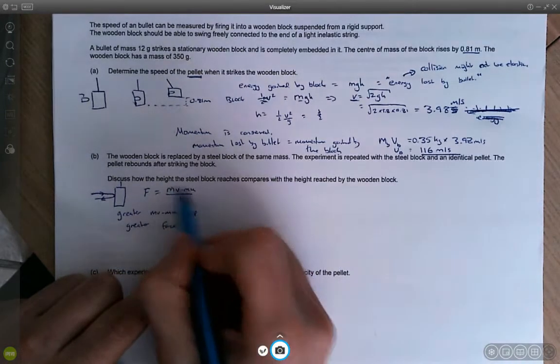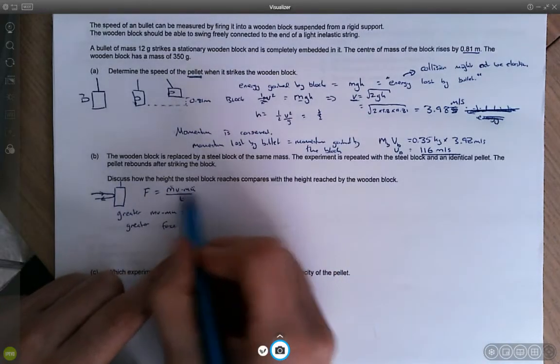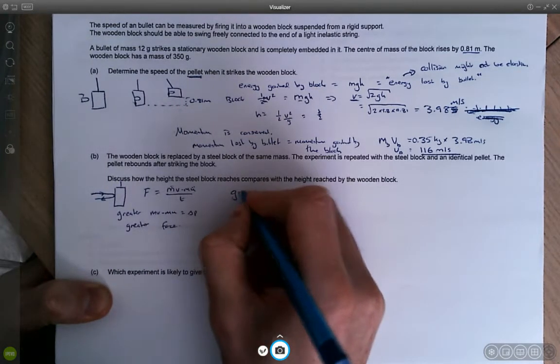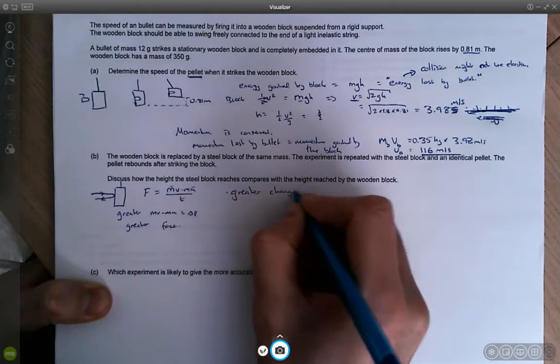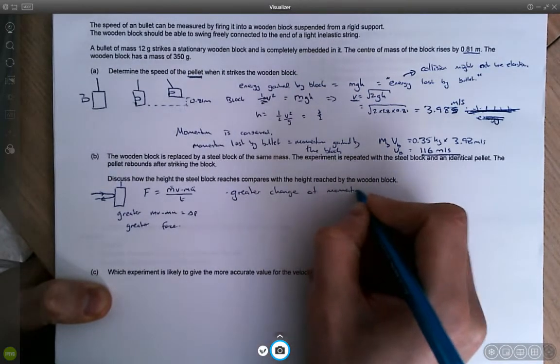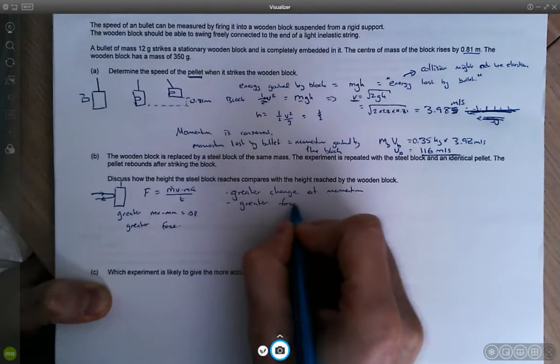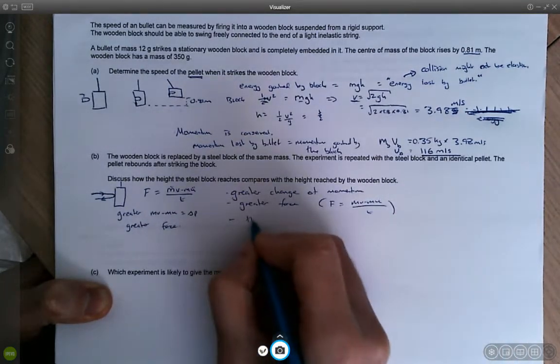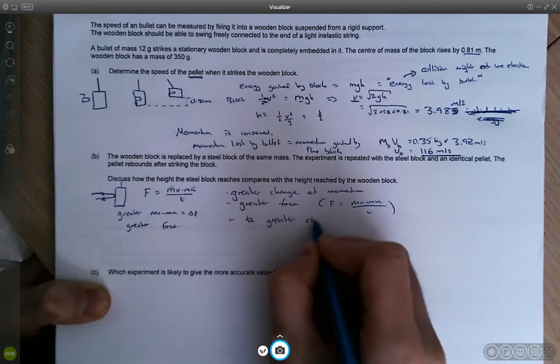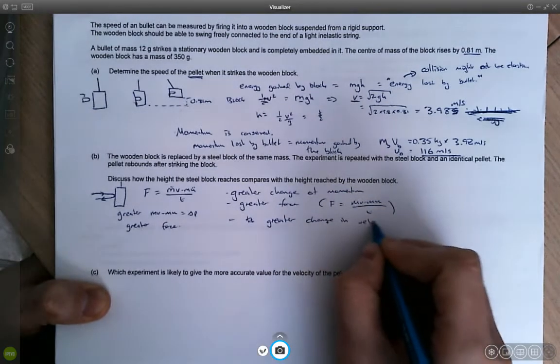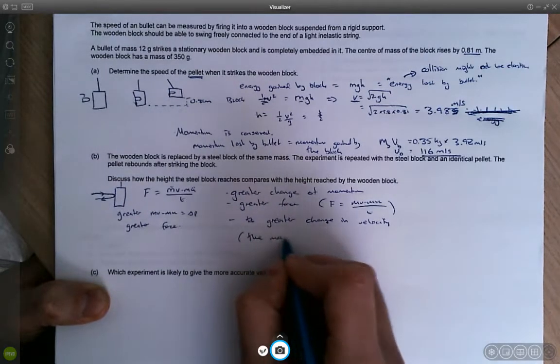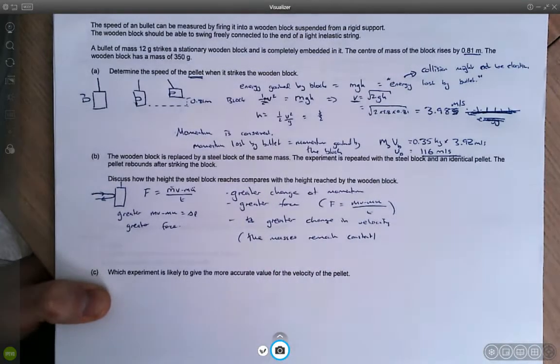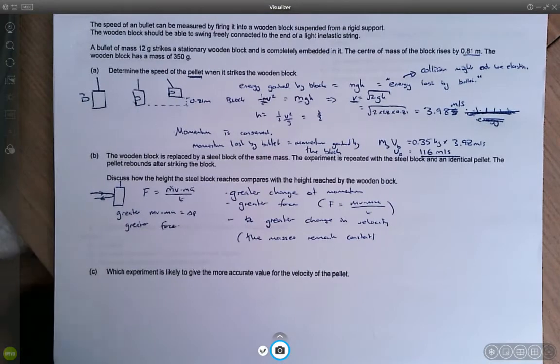Obviously, the masses are constant. So what must have changed? The change in velocity must be greater. So we can say greater change of momentum, greater force because f equals mv minus mu over t. Therefore, a greater change in velocity. Therefore, a greater change in velocity. And obviously, the masses remain constant.